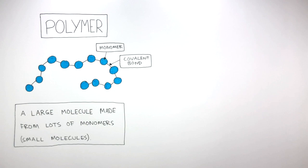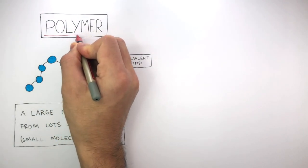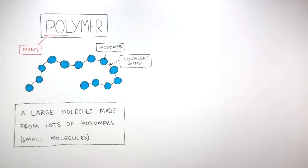It's important to understand the prefix poly in polymer just means many. So when we look at the definition of polymer, lots of, you can think of this being poly, lots of monomers.